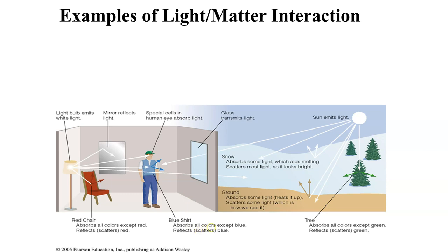Your blue shirt absorbs all colors except blue. Here's how color absorption works: light hits the shirt and white light has all the colors of the spectrum — ROY G BIV. All these colors are absorbed except the color you see. So if you're seeing blue, that means red, orange, yellow, green, and violet are being absorbed, and the blue is reflected out. That's how it works.